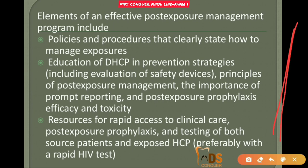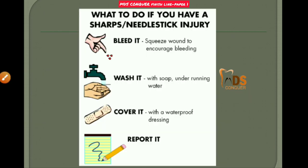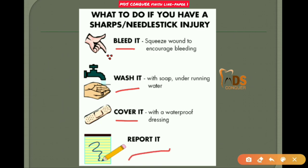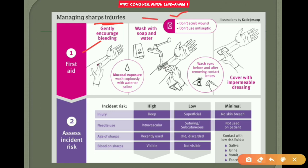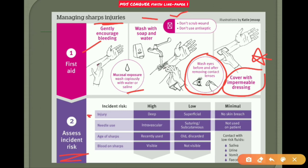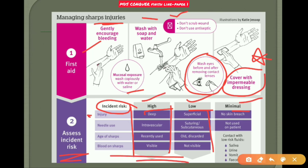Post-exposure management: these policies state how to manage exposure. For a sharp or needlestick injury: squeeze the wound to increase bleeding, wash with soap under running water, cover with a waterproof dressing, and report it. For first aid with sharp injuries: gently increase the bleeding, wash with soap and water, do not scrub the wound, do not use antiseptic. For mucosal exposure: wash eyes before and after removing contact lens. Cover with an impermeable dressing. Assess the incident risk — deep, high, low, or minimal — as shown in this table.